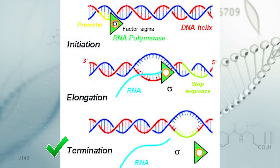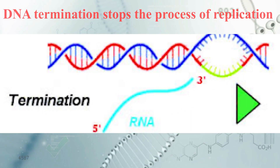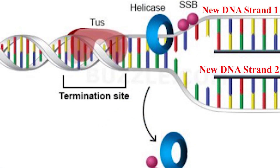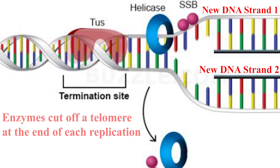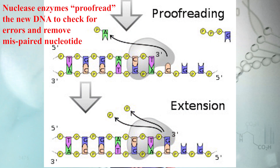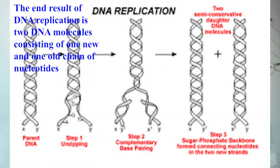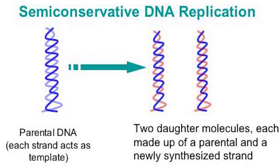The third part of DNA replication is termination, which is the final step of DNA replication — it terminates or stops the process. After elongation is complete, two new DNA strands have replaced the original or parent strand. Without getting too technical, enzymes cut off a telomere at the end of each replication. Finally, enzymes called nucleases proofread the new DNA to check for errors and remove mismatched nucleotide bases. The end result of DNA replication is two DNA molecules, each consisting of one new and one old chain of nucleotides — this is why DNA replication is described as semi-conservative.